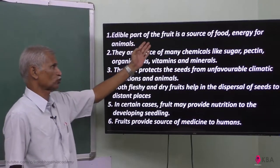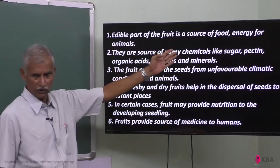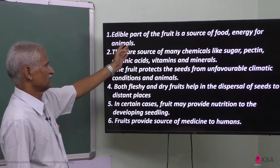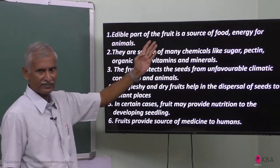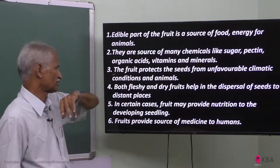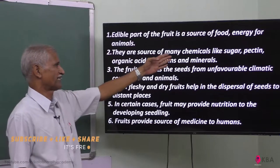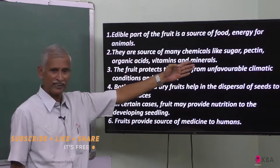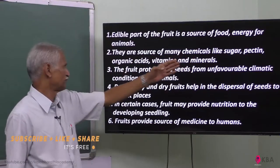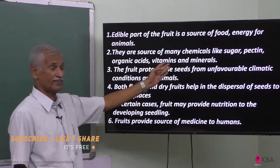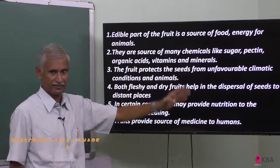The edible part of the fruit is a source of food and energy for animals and human beings. It is also a source of many chemicals like sugar, pectin, organic acids, vitamins, and minerals.